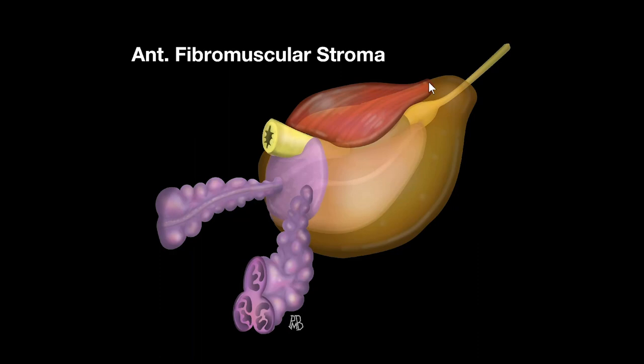Because prostate carcinoma is dark and the fibromuscular stroma is dark, this is where the diffusion weighted image really shines. The cancer will diffusion restrict and the anterior fibromuscular stroma will not restrict. It's composed of fibrous tissue and fibrous tissue is dark. Cancer is dark, so this could be a conundrum and potential pitfall if you don't pay attention to the diffusion weighted image. The fibromuscular stroma in the anterior portion of the gland is somewhat pancake shaped and relatively symmetric from side to side.